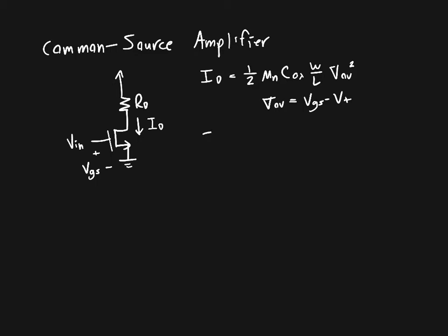If it's in triode, we have the same term out front, μn Cox W/L, except now we've got a more complicated expression: VDS times the overdrive voltage minus 1/2 VDS squared. In amplifier design, we almost never use transistors operating in triode mode.